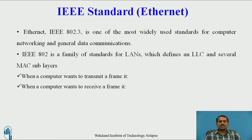Now let us see the IEEE standards. The IEEE 802.3 standard is an Ethernet standard; there are many IEEE standards — 802.3, 802.4, 802.5, 802.6, and more. In this video, I am going to explain only the first IEEE standard, that is 802.3, which is one of the most widely used standards for computer networking and general data communications. IEEE 802.3 is a family of standards for LANs, which defines a logical link control and several MAC sublayers.